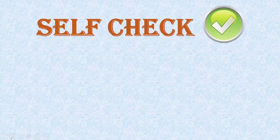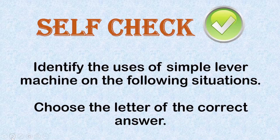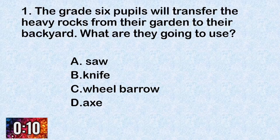Now let's have a self-check. Identify the uses of simple lever machines in the following situations. Choose the letter of the correct answer. Number one: the grade six pupils will transfer the heavy rocks from their garden to their backyard. What are they going to use? A. Saw. B. Knife. C. Wheelbarrow. D. Axe.